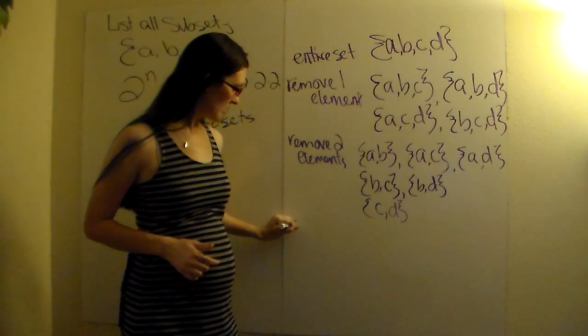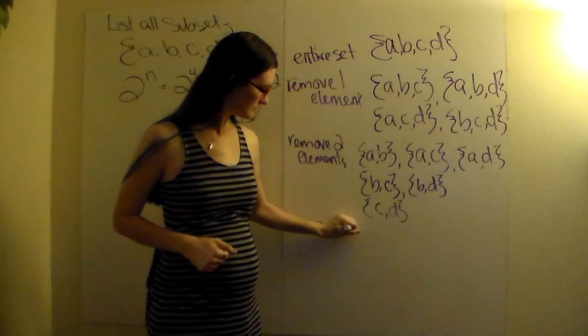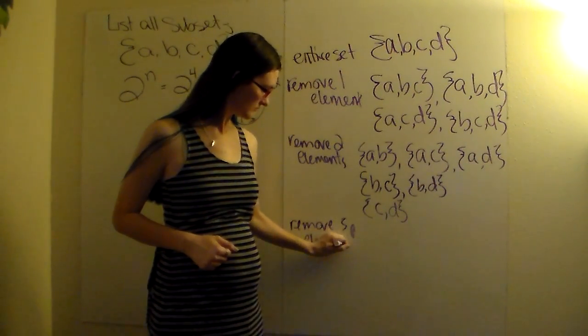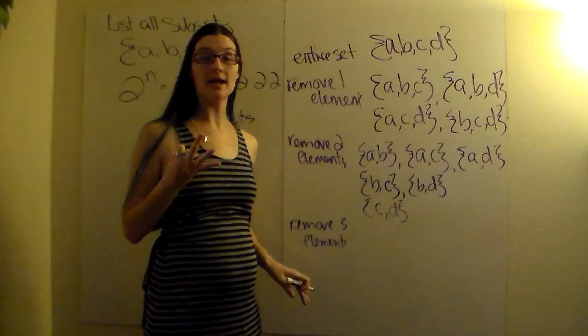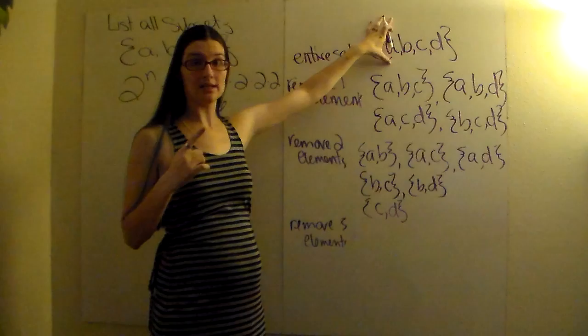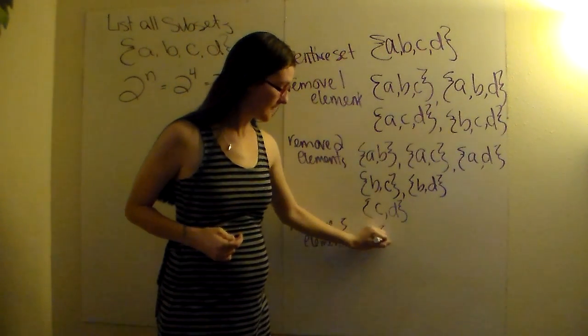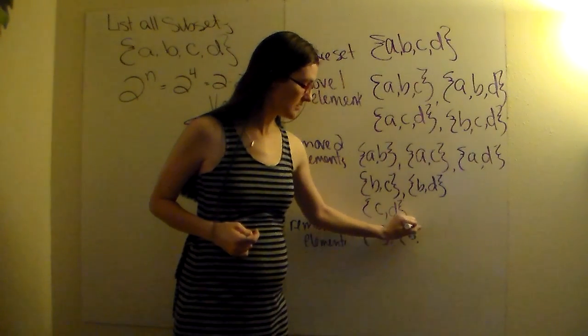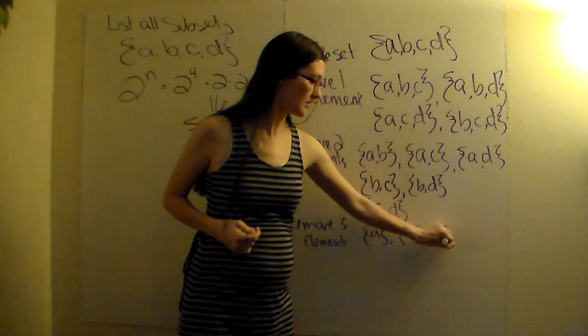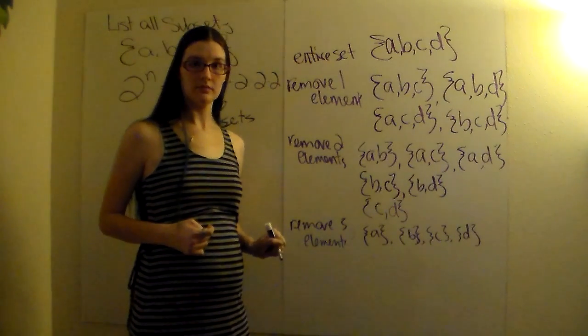Next, you're going to remove another element. So if we remove three elements now from the original set, that's going to leave us with only one element in our sets. So we're going to have element A, element B, element C, and element D.